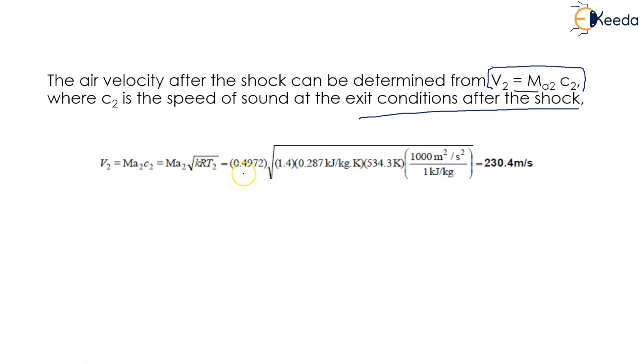V2 = MA2 × √(K×R×T2) = 0.4972 × √(1.4 × 0.287 × 534.3), which equals 230.4 meters per second.